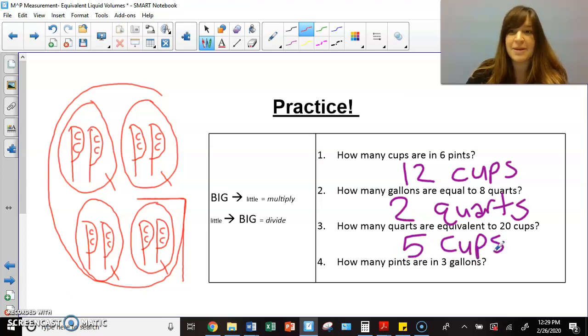And then it's asking me how many pints are in three gallons. So I have one gallon right here and this has eight pints in it. So I could draw some more and I could count that up, or I could say because I'm going from gallons to pints, I'm going from big to little. So I'm going to multiply three times eight, and three times eight is 24. So that is how many pints are in three gallons. Thank you so much for watching and happy practicing.